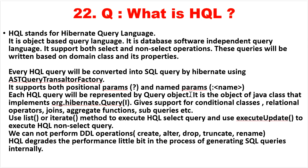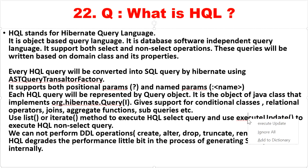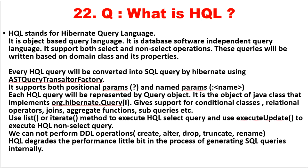Each HQL query is represented by a Query object, which is an instance of a Java class that implements the org.hibernate.query interface. It also supports conditional clauses, relational operators, joins, aggregate functions, subqueries, etc. When fetching data using HQL, we use the list() method for eager loading or the iterate() method for lazy loading. For save, insert, or update operations we use executeUpdate(). HQL cannot perform DDL operations like CREATE, ALTER, DROP, TRUNCATE, or RENAME. It also slightly degrades performance due to the internal SQL generation process.